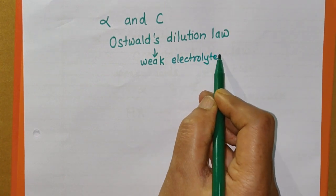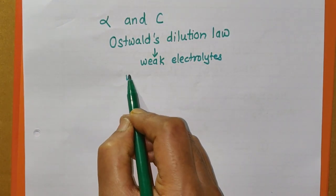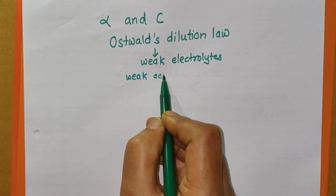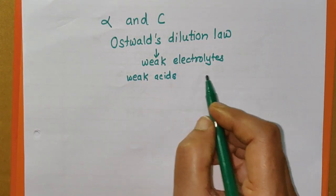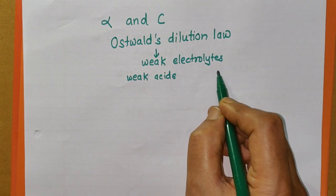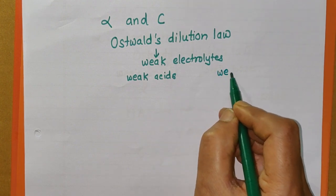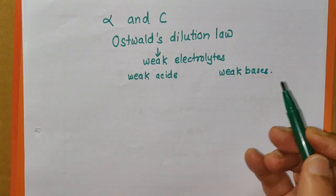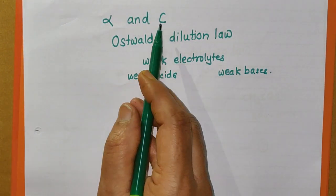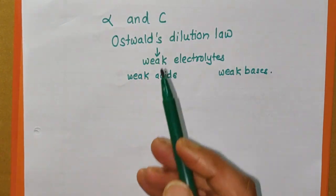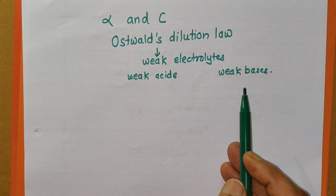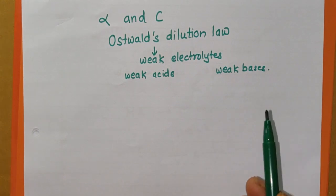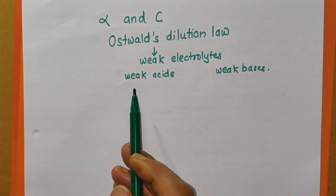Remember that Oswald's Dilution Law is applicable only for weak electrolytes — it is not applicable for strong electrolytes. Weak acids and weak bases are weak electrolytes, so Oswald's Dilution Law is applicable only for weak acids and weak bases. It gives the relation between degree of ionization and concentration of weak acid or weak base at constant temperature.